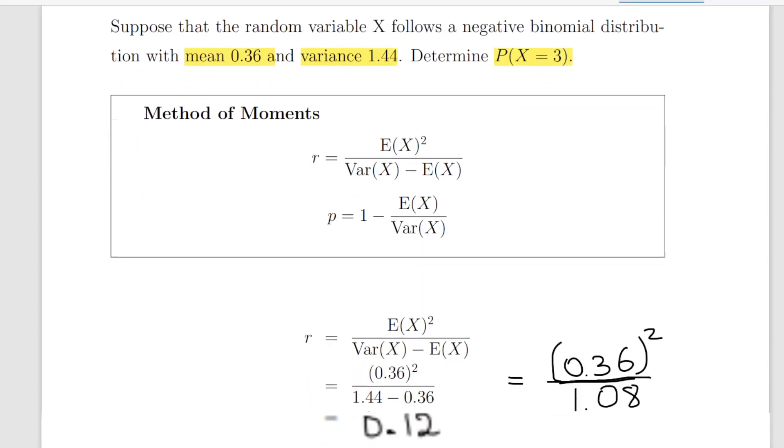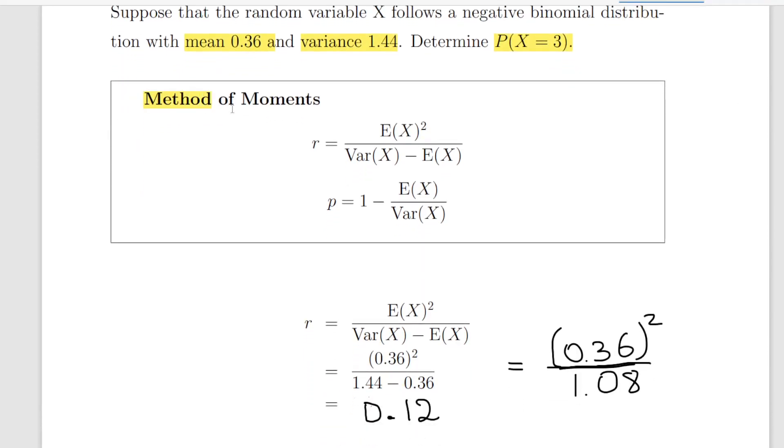This is the method of moments. We are given the mean and the variance. The mean is also the expected value of X. What we do is just square that in this particular case, and divide that by the variance of X minus the expected value of X. That will give us r, which is one of the two parameters for the negative binomial distribution.